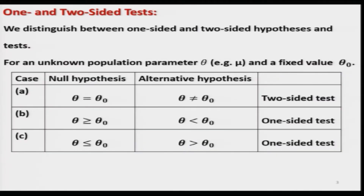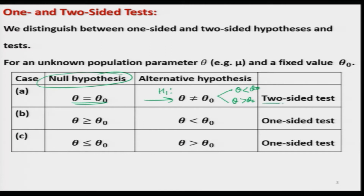Let me give you an idea about the one-sided and two-sided test. Suppose the null hypothesis is H naught: theta equal to theta 0, where theta is some parameter and theta 0 is a known value — for example, theta can be the mean of a normal population. If the alternative is H1: theta not equal to theta 0, then we have two options: theta less than theta 0 or theta greater than theta 0. That is why this is called a two-sided test.